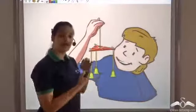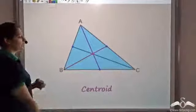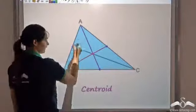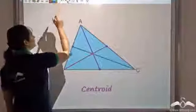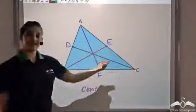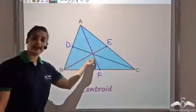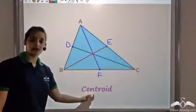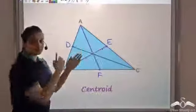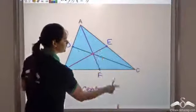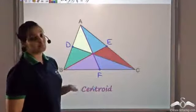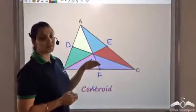Why did the triangle get balanced at that point? This point is the intersection of the three medians of triangle ABC, where the midpoints are called D, E, F. This point is called the centroid. We have seen that a median divides a triangle into two parts of equal area. These three medians divide the triangle into six parts, and all six parts are of equal area. That is why at the centroid, we can balance a triangle horizontally.